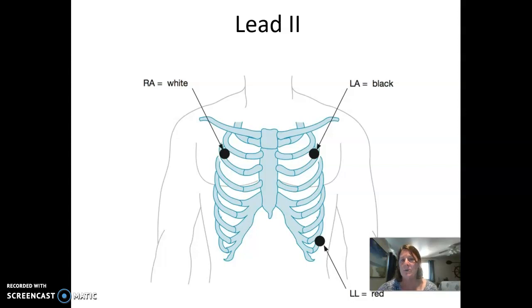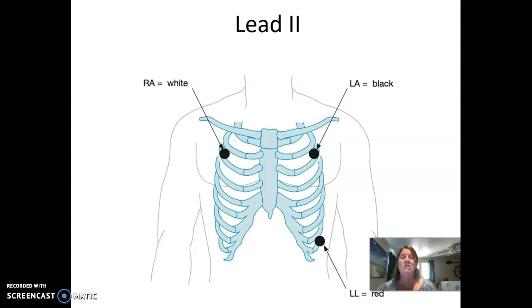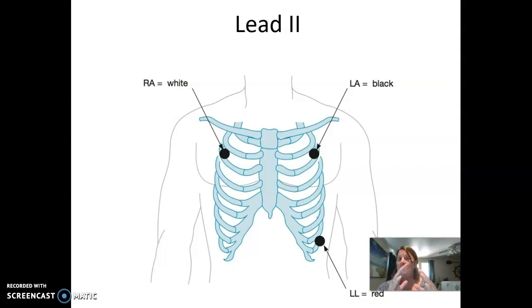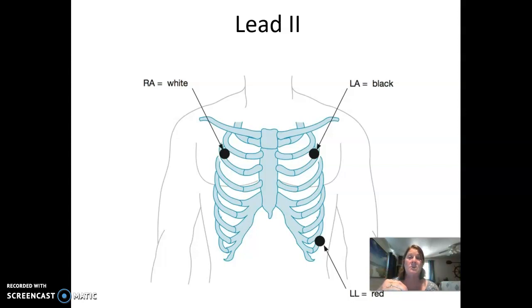In lead two, your positive electrode is the red one. Things are picked up on ECG paper based on how they are moving towards the positive electrode. If the signal is going towards the positive electrode, the waveforms will be upright — your P wave will be upright, your QRS will be upright. If things are going away from the positive electrode, then waveforms will go below the isoelectric line — the P wave would go down, the QRS would go down. So which lead you're monitoring determines whether waveforms go above or below the isoelectric line.